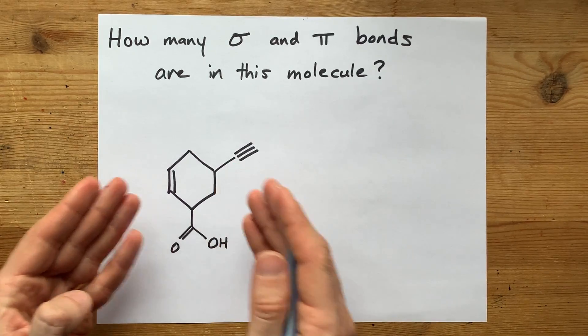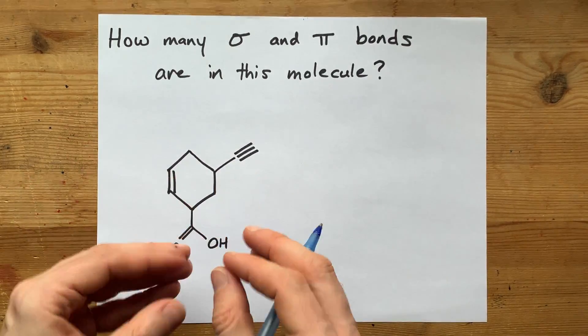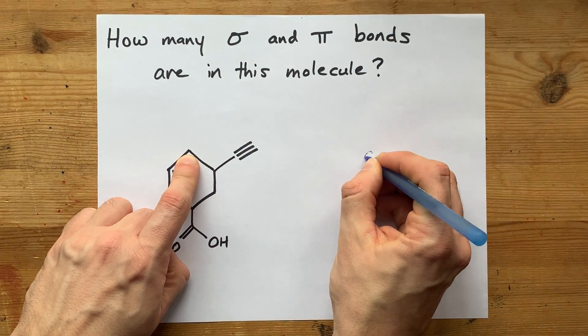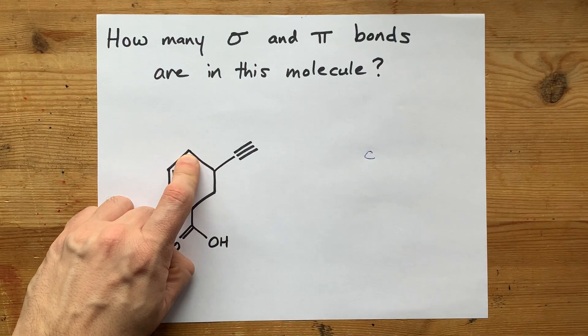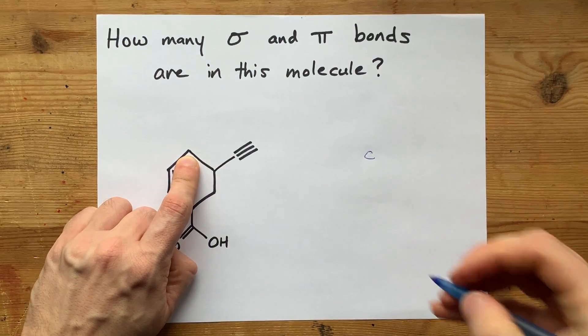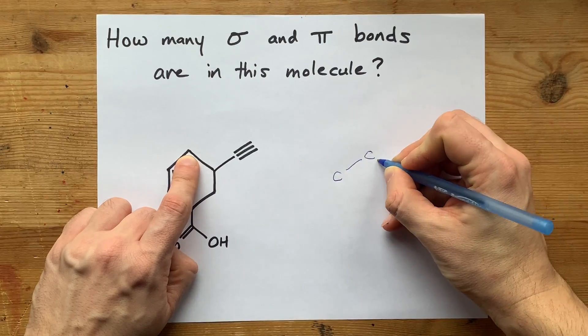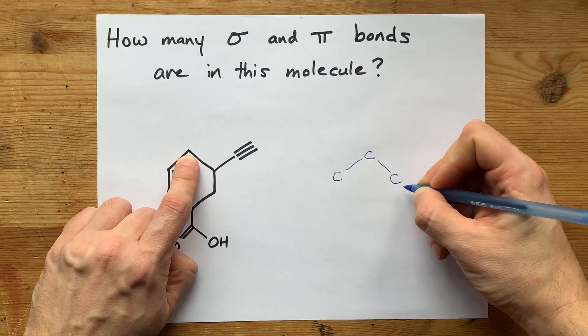I propose we redraw this and show each of the bonds together. I'm going to start with this carbon at the top here. I'm going to put a C there. Now, I don't have any bonds yet, so let's not get excited. I do have a single bond to this carbon down here and a single bond to this carbon down here.